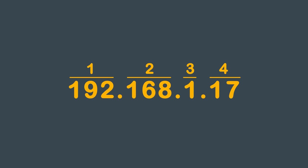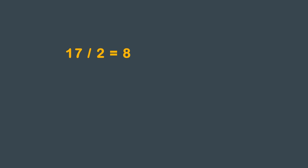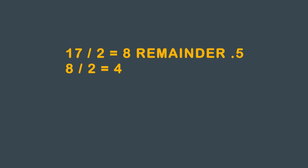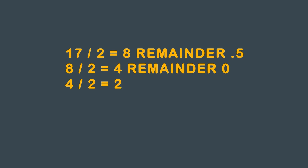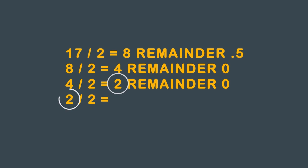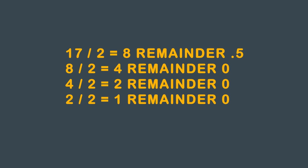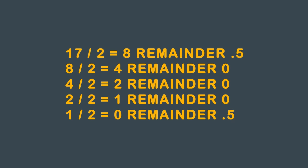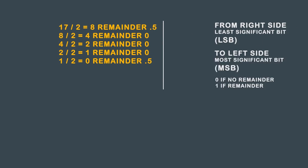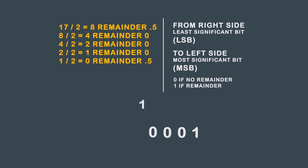The last octet in the address is 17. Take 17 divided by 2: you get 8 with a remainder of 0.5. Take 8 divided by 2: you get 4, no remainder. Take 4 divided by 2: you get 2, no remainder. Take 2 divided by 2: you get 1, no remainder. Take 1 divided by 2: you get 0 with a remainder of 0.5. Working from the LSB to the MSB, you get 1 0 0 0 1.